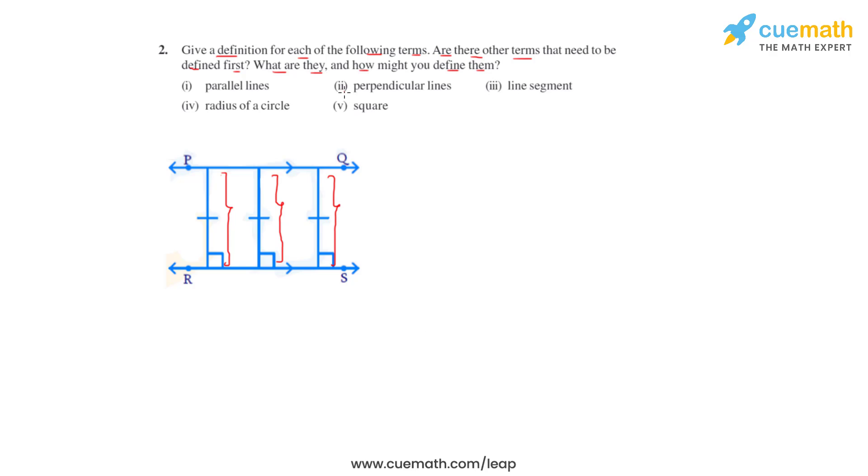Now let's go on to the second term which is perpendicular lines. If the angle between two lines is equal to 90 degrees, then these lines are perpendicular to each other.